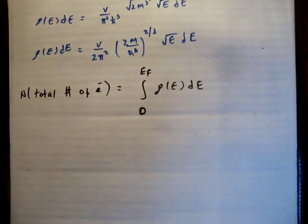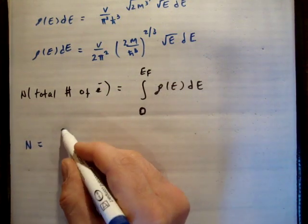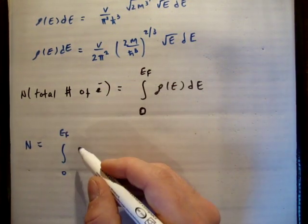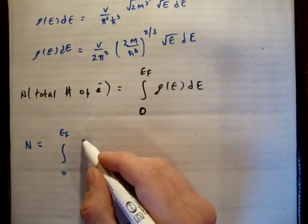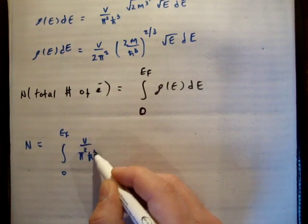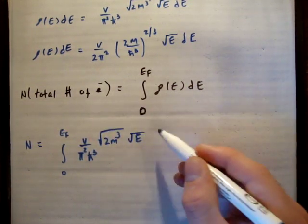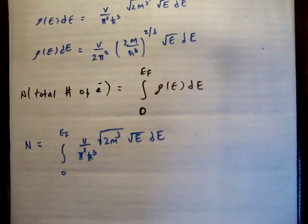So let's go ahead and do that. I can say that N is equal to the integral from zero to the Fermi energy of V, which is the volume, over pi squared h bar cubed times 2m cubed rooted times root E integrated dE.